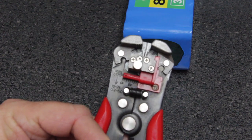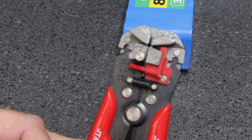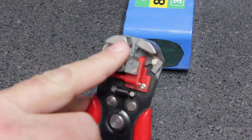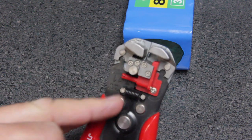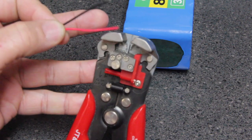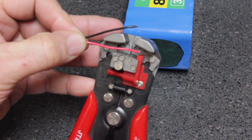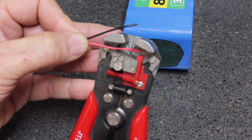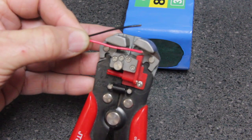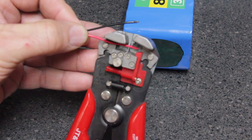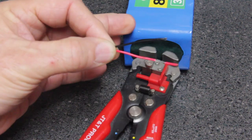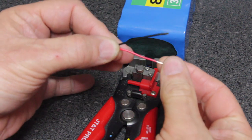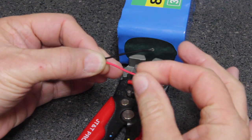When I strip wire, I like to use this style of stripper. It automatically adjusts to the thickness of the insulation and then strips the wire. What you want is at least a half inch to three quarters of an inch of bare wire when you strip. You place the wire in between the jaws and then you squeeze the pliers, and if you notice, the insulation comes off.